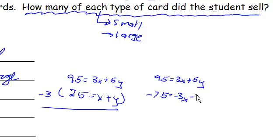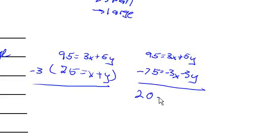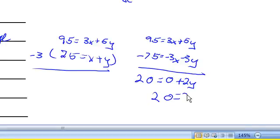Negative 3x minus 3y. Let's add these up. This is 20, this is 0, and this is 2y, positive 2y. 20 equals 2y, y equals 10.